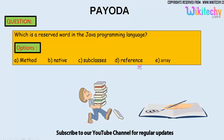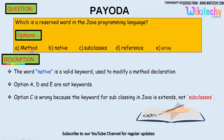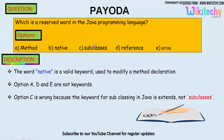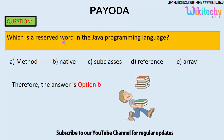The word 'native' is a valid keyword used to modify a method declaration. 'Method' is not a reserved word, and 'reference' and 'array' are not reserved words or keywords. Option C is wrong because in Java they use 'extends' and not 'subclasses.' So the answer is option B — 'native' is a reserved word in the Java programming language.